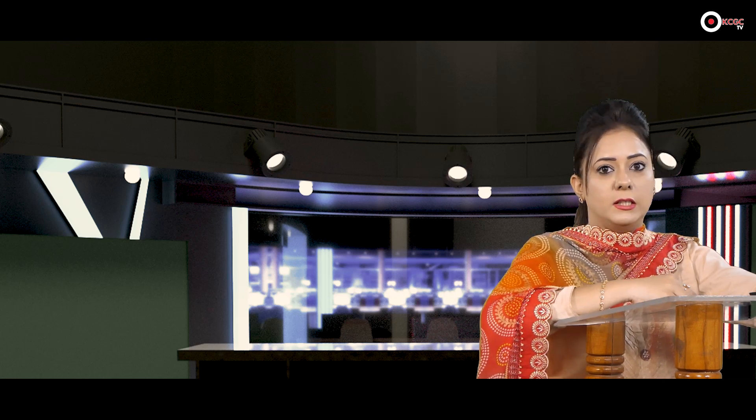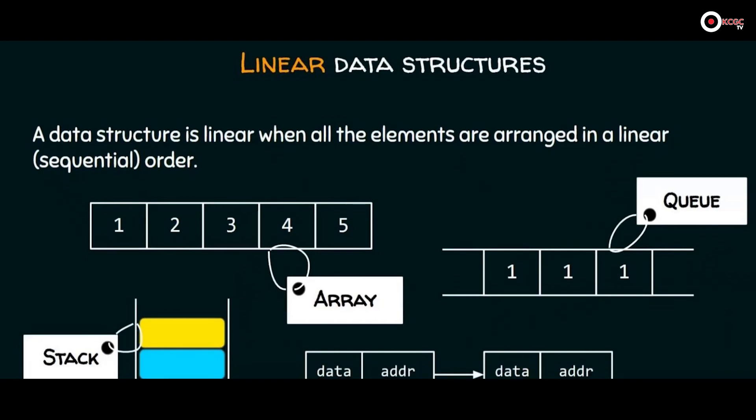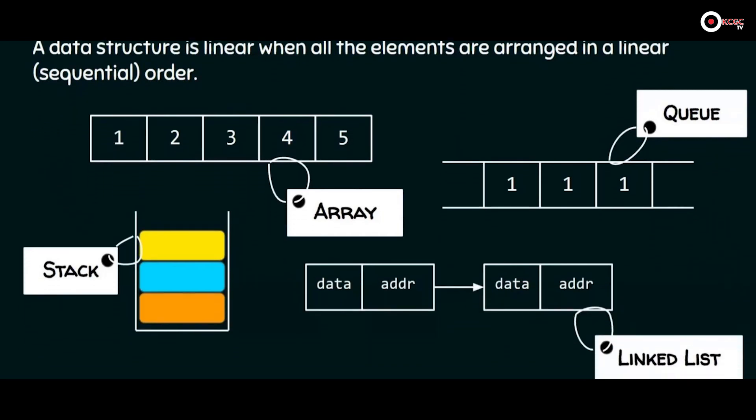Data structures can be defined as any logical or mathematical model of a particular organization of data. In other words, a data structure is a systematic way to organize data so that it can be used efficiently. We have two types of data structures: linear data structure and nonlinear data structure. A data structure is linear if all the elements are arranged in a sequence. Examples of linear data structures are stacks, queues, arrays, and linked lists.